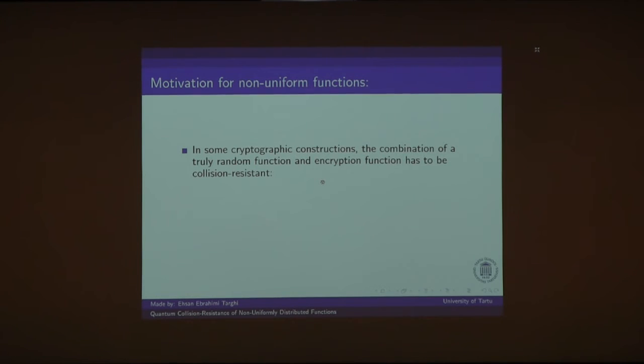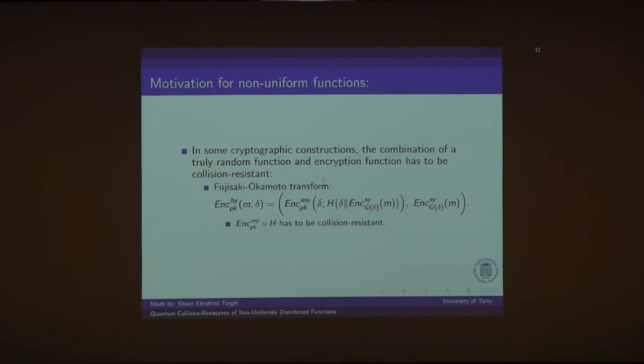And here is the motivation. In some cryptography constructions, the combination of a random function and an encryption function or a function that is not uniform has to be collision-resistant. So it's not just a random function. As an example, Fujisaki Okamoto transform.